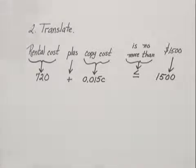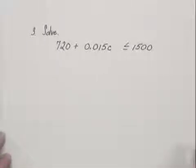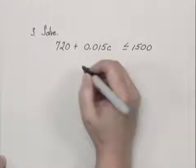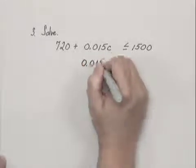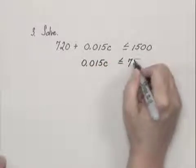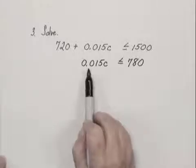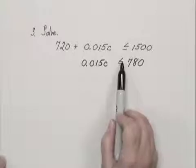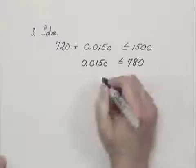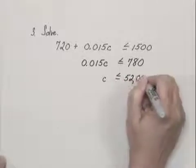We can move to our third step, which is to solve, and we solve the inequality. We subtract 720 on both sides of the inequality, and we get 0.015C is less than or equal to 780. And we divide both sides of the inequality by 0.015, it's a positive number, so the direction of the inequality symbol does not change. And we get C is less than or equal to 52,000.